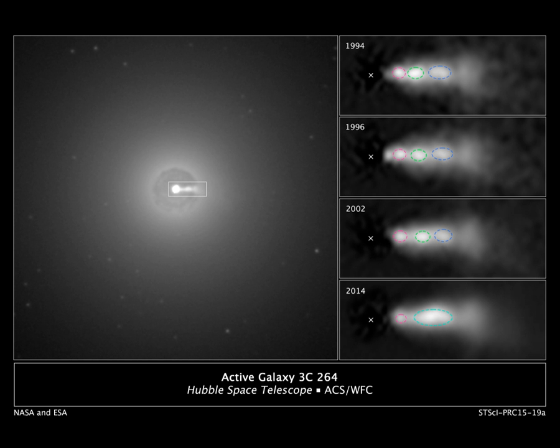Relativistic jets are beams of ionized matter accelerated close to the speed of light. Most have been observationally associated with central black holes of some active galaxies, radio galaxies or quasars, and also by galactic stellar black holes, neutron stars or pulsars. Beam lengths may extend between several thousand, hundreds of thousands or millions of parsecs.